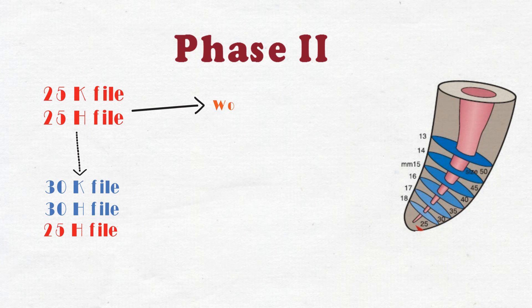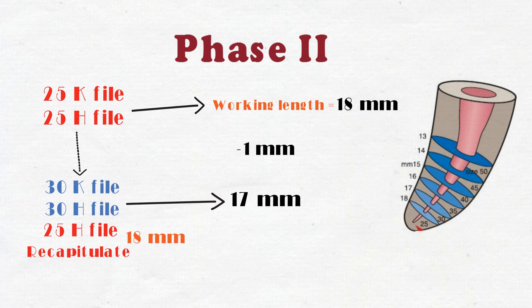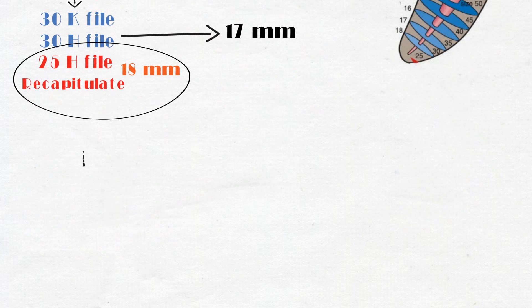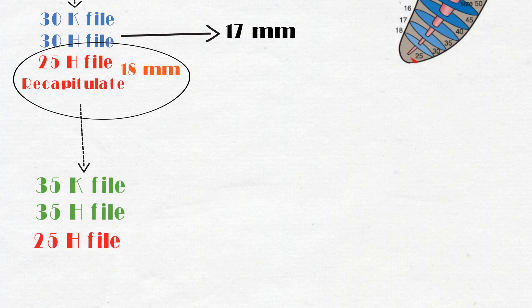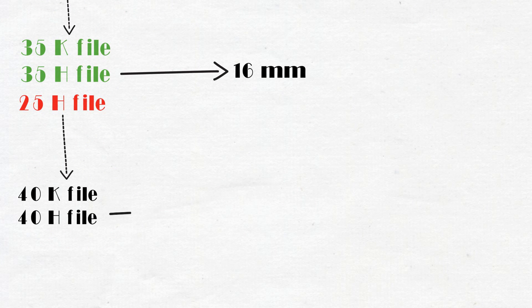Phase 2: Place the next file in the series to a length 1 mm shorter of the working length. Remove it, irrigate, recapitulate. Repeat the same procedure with successively larger files at 1 mm more shorter from the previous used file.